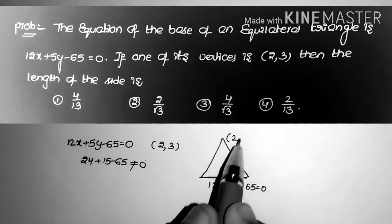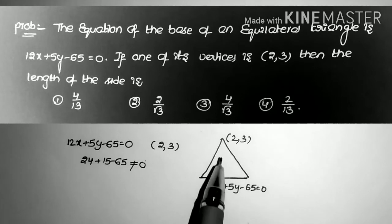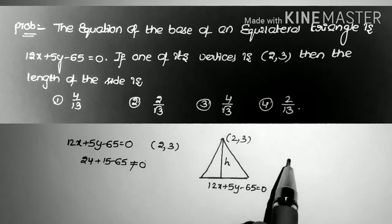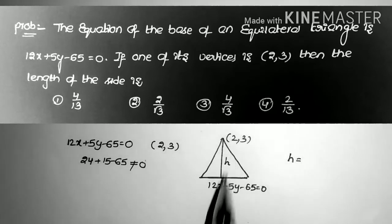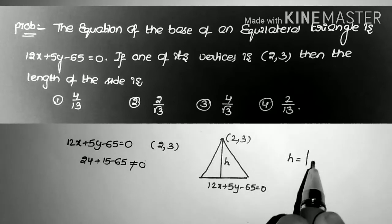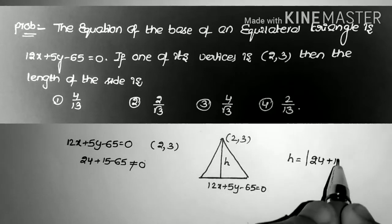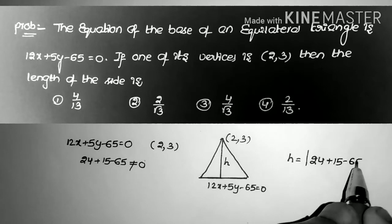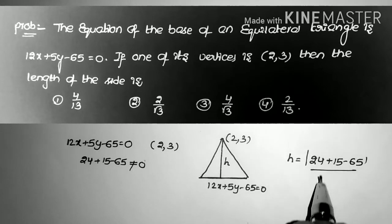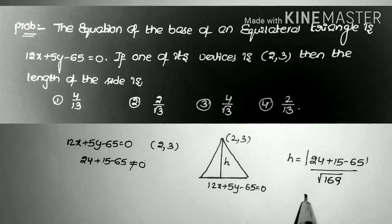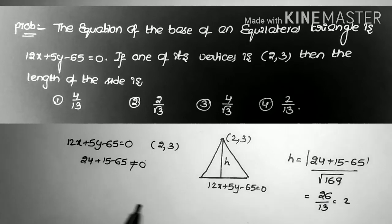So (2,3) is the opposite vertex. Now I find the height, which is the perpendicular distance from this point to the line. That is |12×2 + 5×3 - 65| / √(a² + b²) = |24 + 15 - 65| / √(144 + 25) = 26/13 = 2.